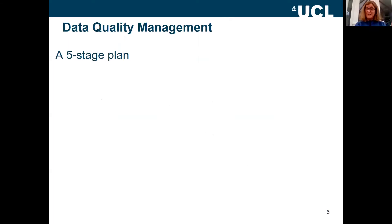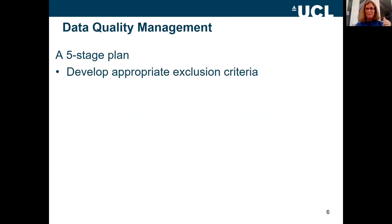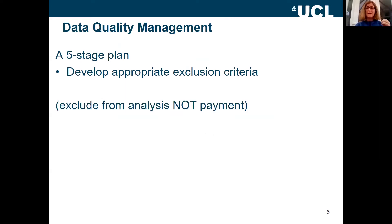So, a five-stage plan. This really focuses around developing appropriate exclusion criteria, accepting that some people will do your experiment who shouldn't be doing your experiment, and how you're going to make sure you exclude their data. I'm talking very specifically about excluding them from your data analysis — not excluding them from being paid.